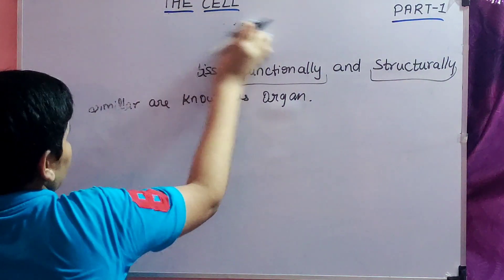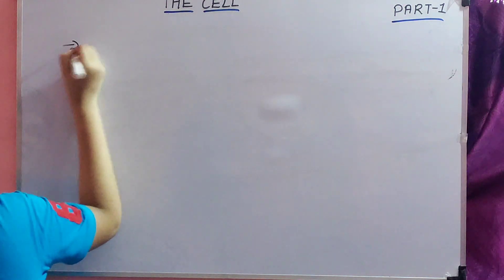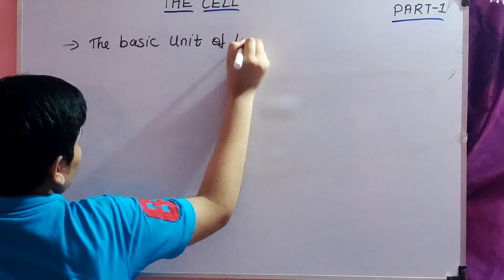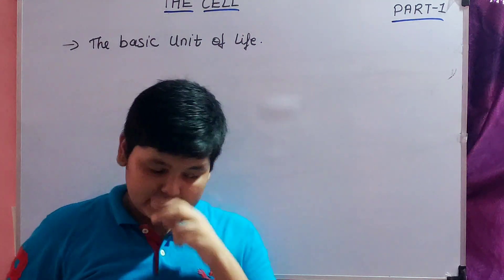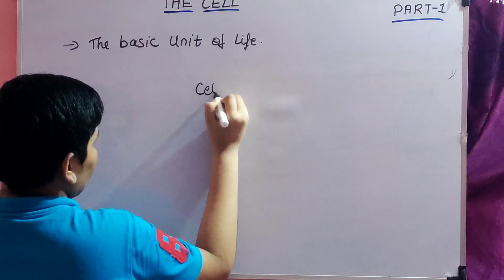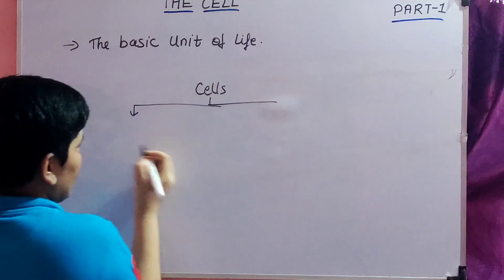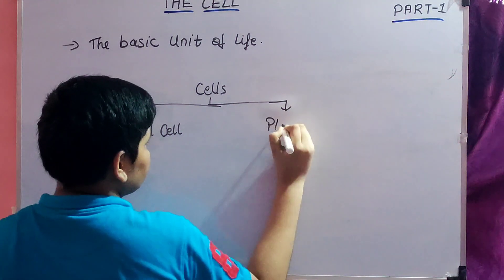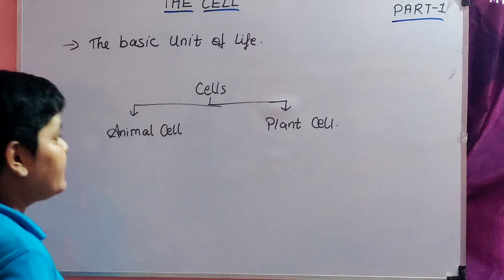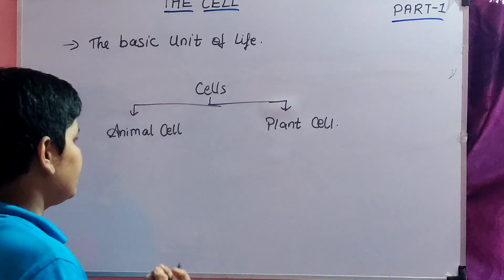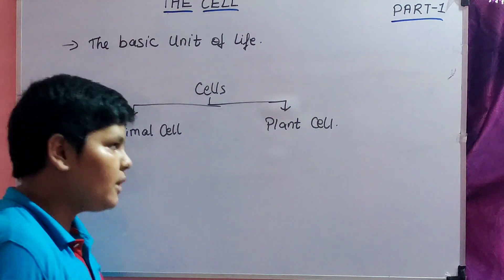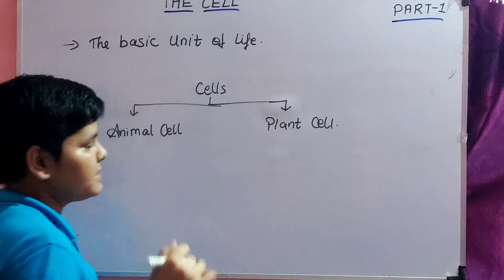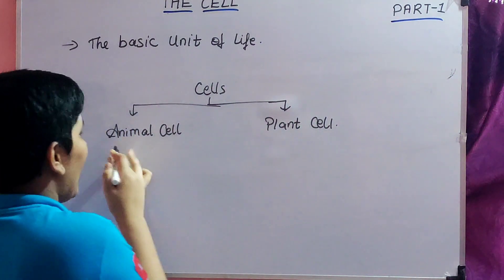We have understood that the cell is the basic unit of life. There are actually two types of cells: the first type is the animal cell, and the second type is the plant cell. There are many differences between them. Animal cells have some organelles which plant cells do not have, and plant cells have some organelles which animal cells don't have. For example, plant cells have chloroplasts, thylakoids, and grana, which animal cells do not have.